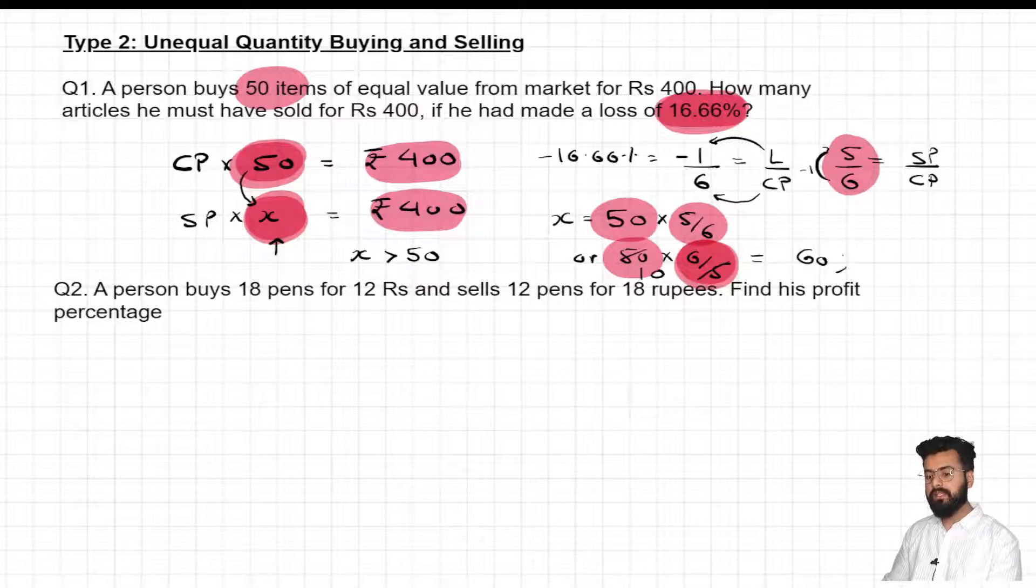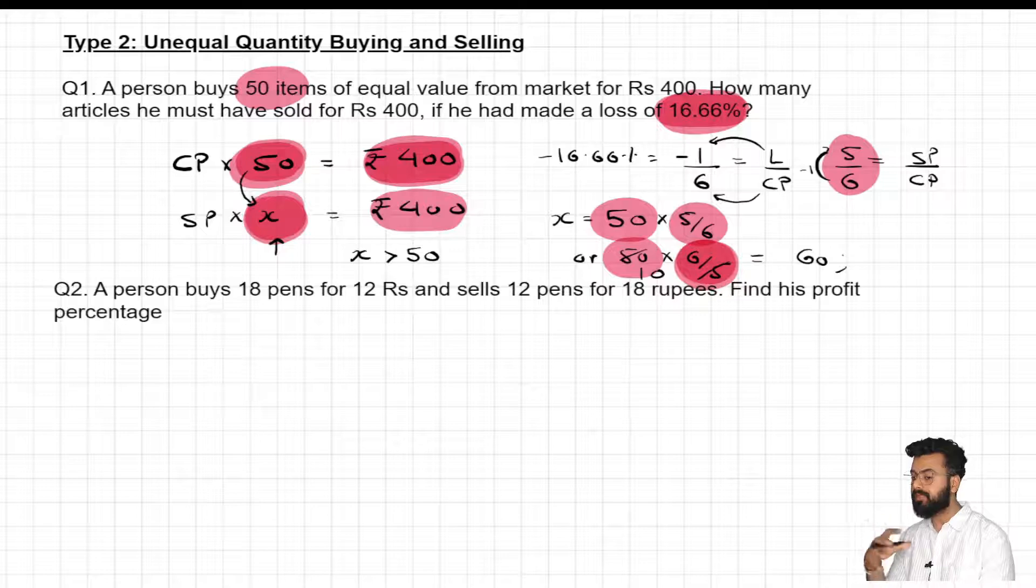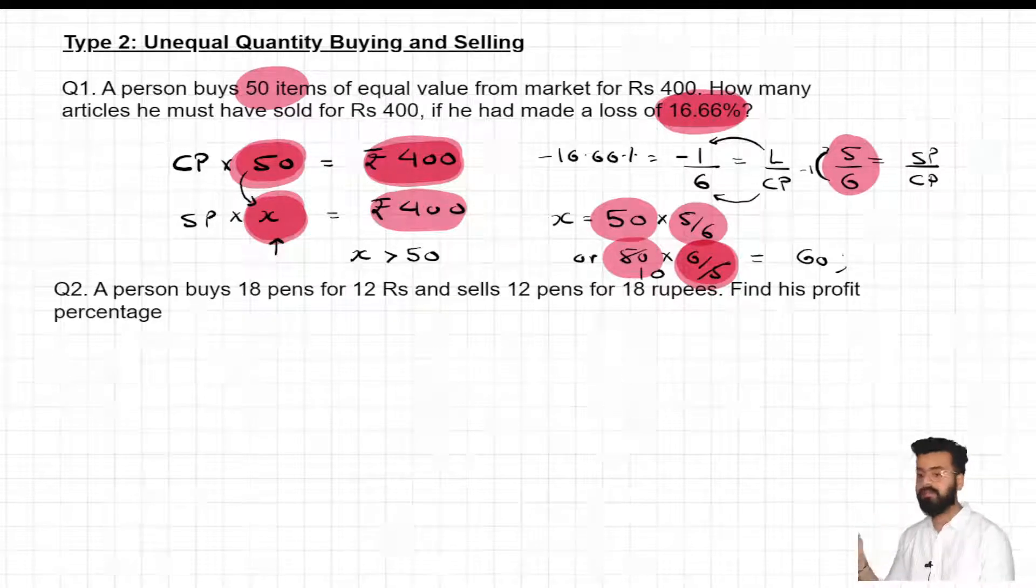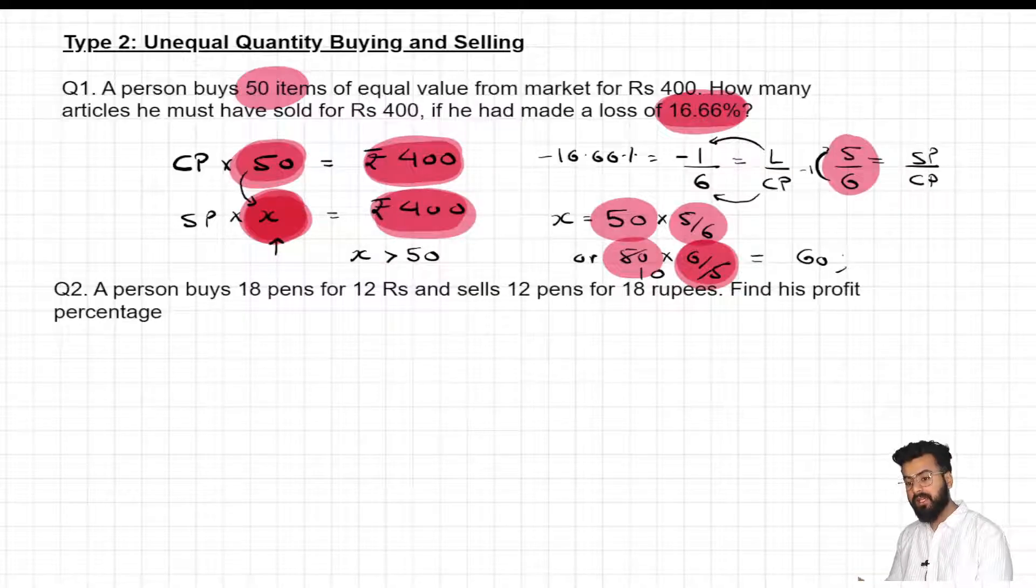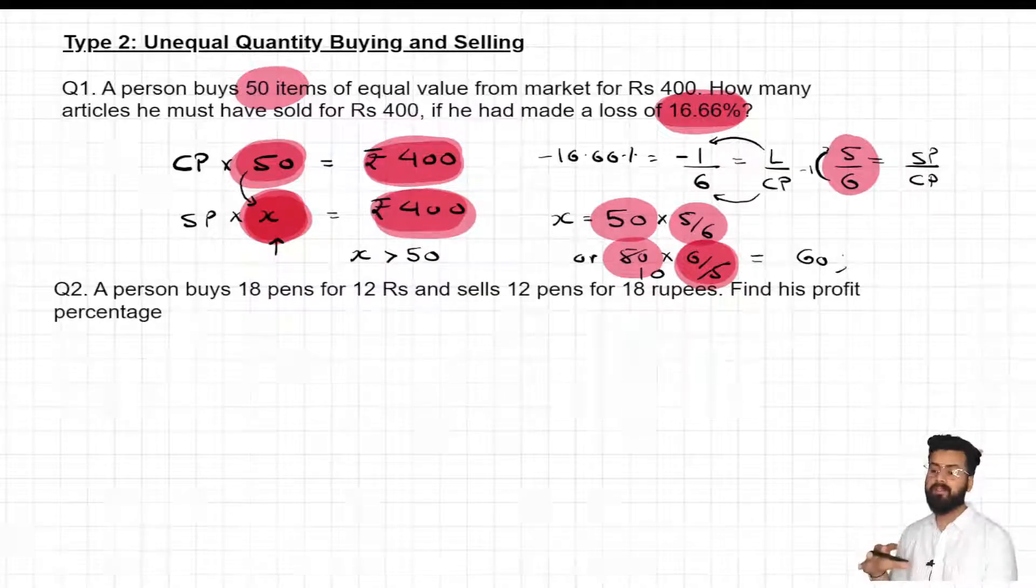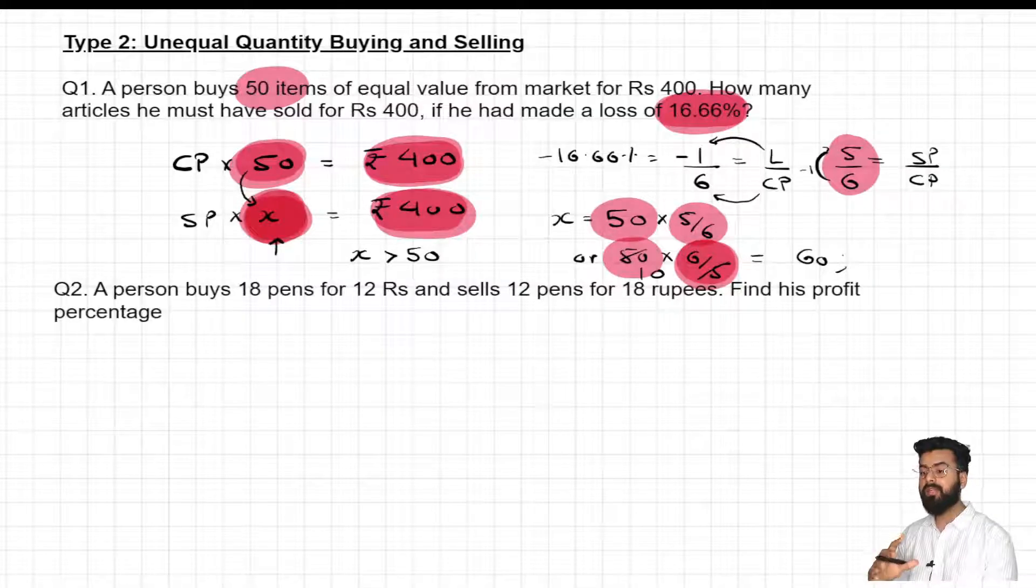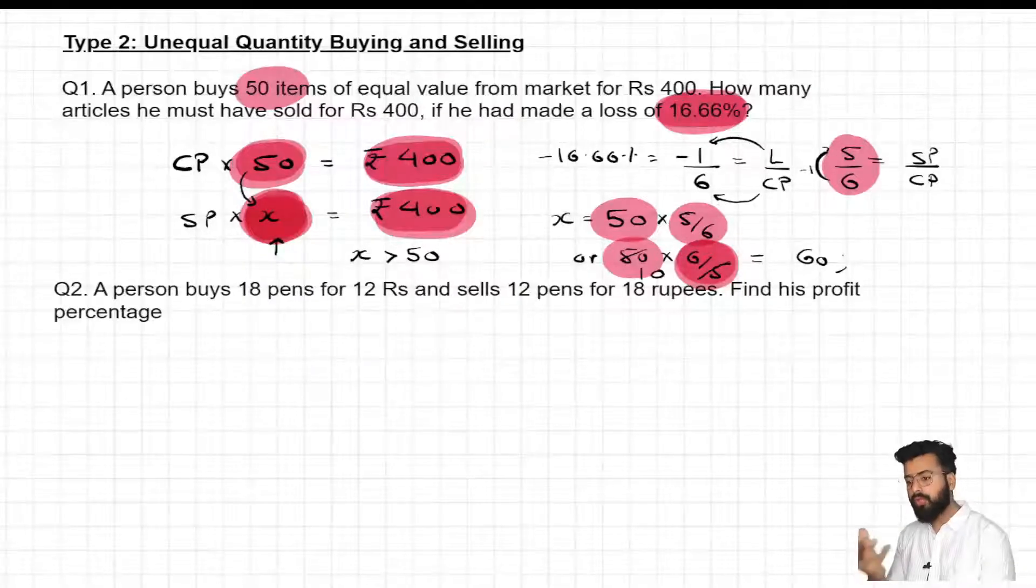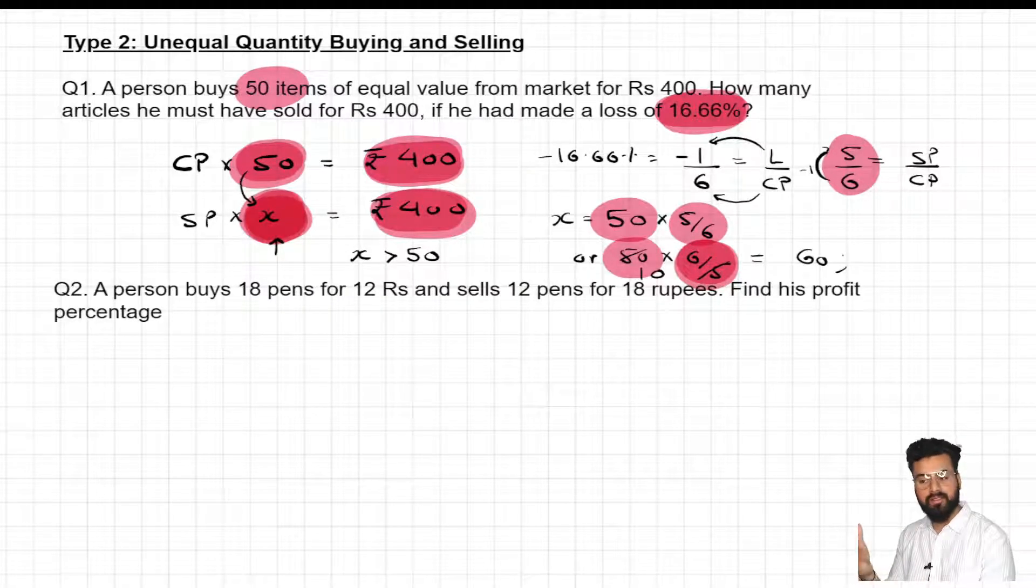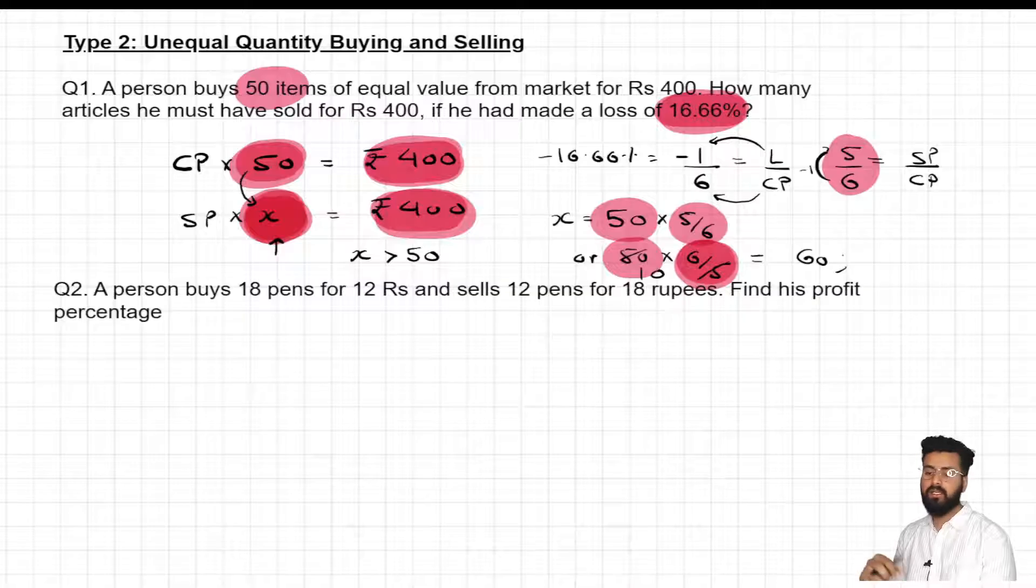It means he must have sold 60 articles for rupees 400. Now try to understand what has happened in this question. The person purchased 50 items for rupees 400. Yarni ki, usne 400 rupees mein 50 items khari di thi. Yeh iska expenditure tha. But he has sold 60 items for rupees 400. So jab revenue karne ki baari aai, so woh 400 rupee hi vaapis leke aaya. Aur 400 rupee mein usne kitne articles baise di hai, 60 baise di hai. So I can clearly see, it's a case of loss. Ishi liye usko loss hua. Aur kitne ka loss hua? 16.66 percent ka.